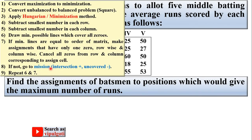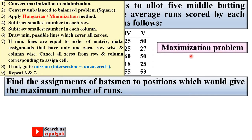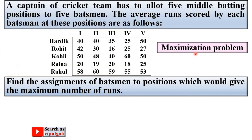These are the steps for the assignment problem. The first step is to convert the maximization problem to a minimization problem. Our objective here is the maximum number of runs, so this is a maximization problem. To convert from maximization to minimization, first you have to pick up the maximum value from this matrix.